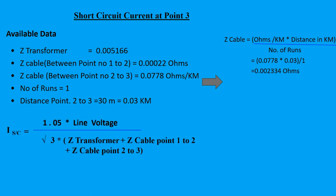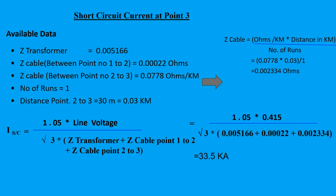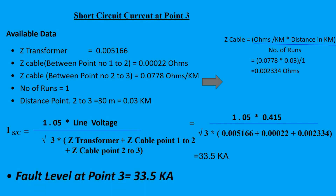ISC equals 1.05 times the line voltage, all divided by root 3 times Z transformer plus Z cable point one to two plus Z cable point two to three. That gives us 1.05 times 0.415, all divided by root 3 times 0.005166 plus 0.00022 plus 0.002334, which comes to 33.5 kilo amperes. So the fault level at point number three is 33.5 kilo amperes.